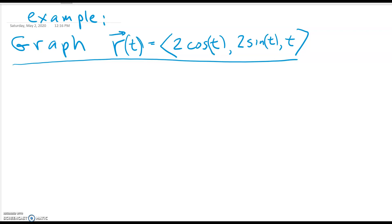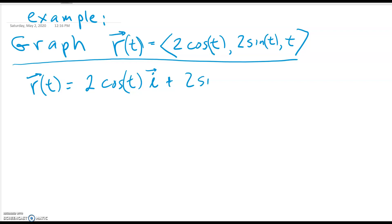This is the same example from the previous video: graph the vector function 2 cosine t, 2 sine t, t. There are three ways to represent this vector function. The first is in standard component form, but you can also write it in i, j, k form: 2 cosine t times unit vector i plus 2 sine t times unit vector j plus t times unit vector k. There's no real advantage to writing it that way, but sometimes you'll see it in the book.